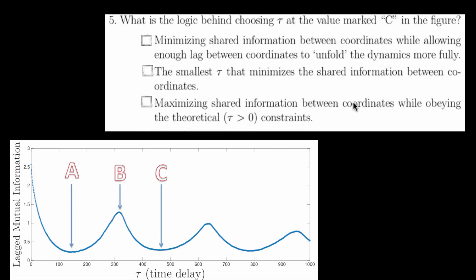And finally, the logic behind choosing the tau marked C in the figure is to minimize the shared information between coordinates while allowing enough lag between coordinates to unfold the dynamics more fully.